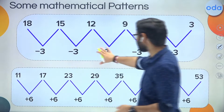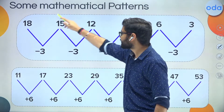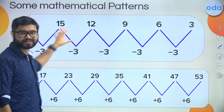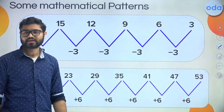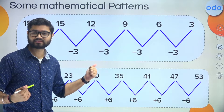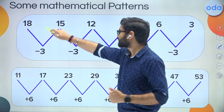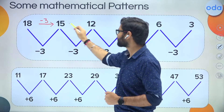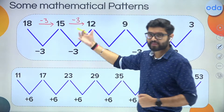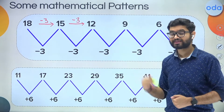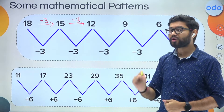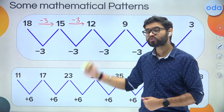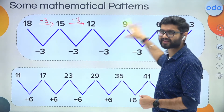Let me give you a few examples. Over here I have the numbers 18, 15, 12, 9, 6, 3. These are not random numbers — they follow a particular logic. If you observe closely, you will find that each time we are subtracting 3 to get the next number. This minus 3 is the rule for this particular pattern. All you have to do to solve a number pattern question is identify the logic and use the same logic to find either the missing number or the next number.